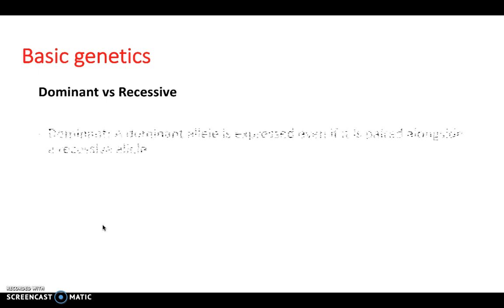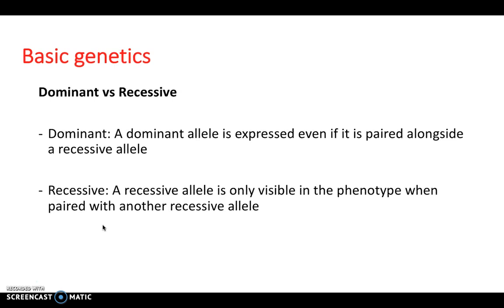So dominant and recessive, again, just more key terms. So a dominant allele is expressed even if it is paired alongside a recessive allele. And a recessive allele is only visible as a phenotype when paired with another recessive allele.